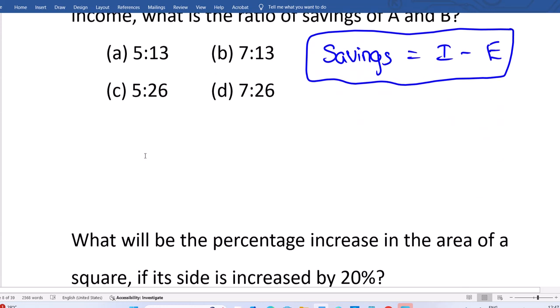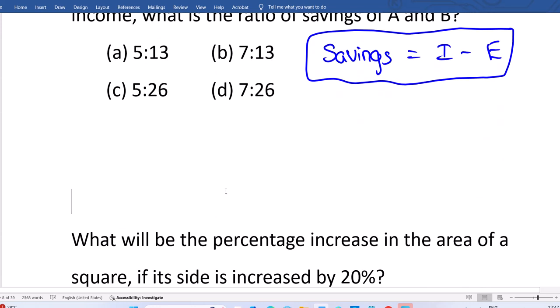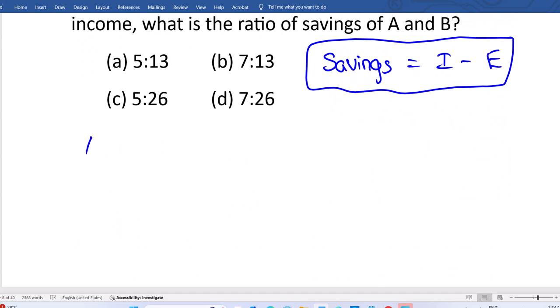So let us go directly. A saving divided by B saving. A saving with respect to B savings. So A income minus A expenses, B income minus B expenses.